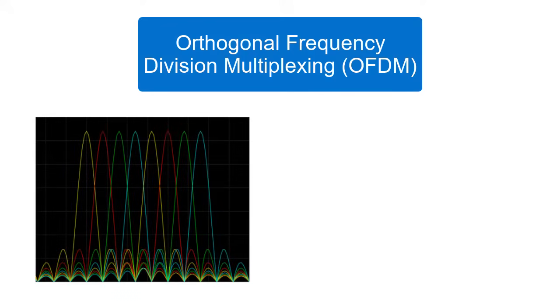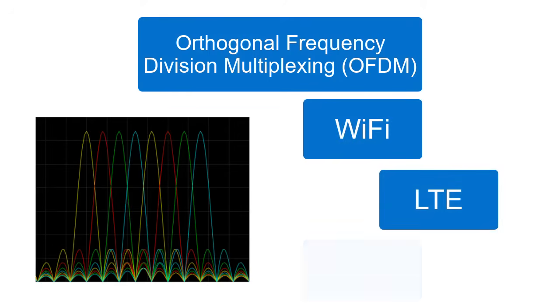OFDM transmits signals over multiple frequency bands and is used widely in many common wireless communication standards, such as Wi-Fi, LTE, and 5G.